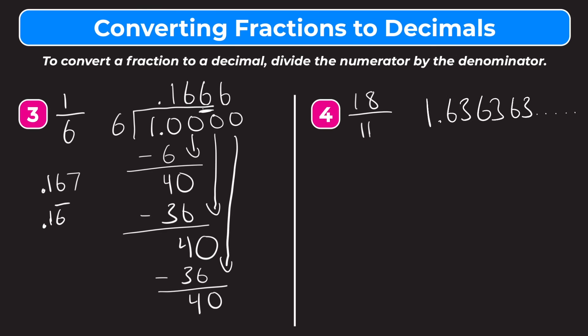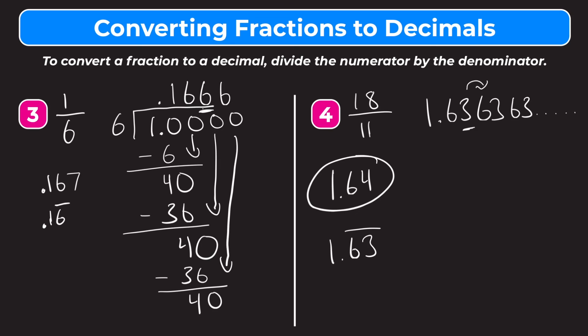We still have the same two options. We can round — if we round to the hundredths place, we look at the hundredths digit which is three, and to the right is a six, so we round up. Rounded, that would be 1.64. Our other option is to use a bar over the digits that repeat. In this case both the six and the three repeat, so the bar has to go over both digits. That would look like 1.63 with a bar over both the six and the three, signifying that both digits repeat indefinitely.